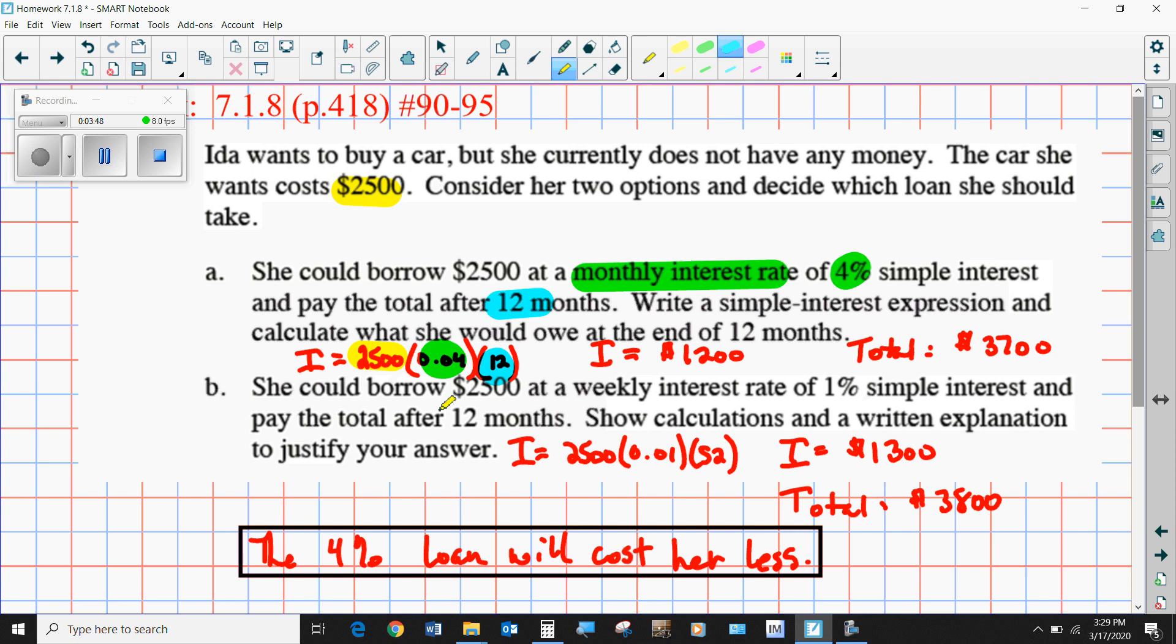She could borrow $2,500 weekly at an interest rate of 1%, but since there's generally four weeks in a month, I'm wondering if that isn't going to be close to the same. Let's see. So it turns out there's 52 weeks in a year, so 1% times 2,500 times 52 ends up being $1,300.